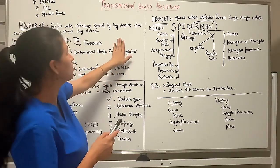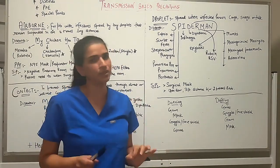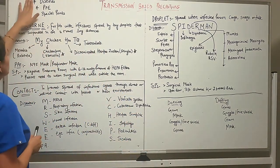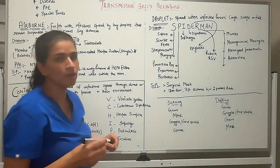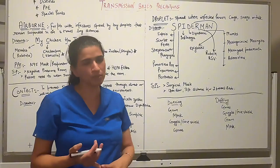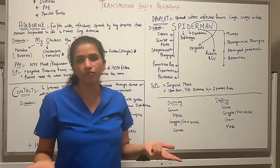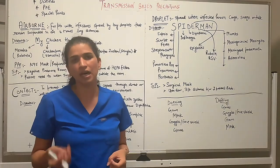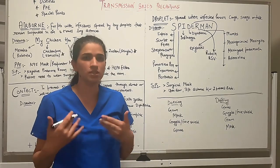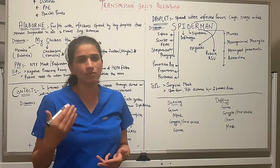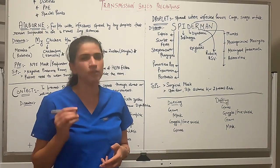Let's get started with transmission-based precautions. We have three main types to discuss: airborne, droplet, and contact precautions. For each one, we need to know the diseases covered, what PPE the nurse needs to wear, whether the patient or visitors need any protective equipment, and some special points that are likely to appear on your NCLEX exam.